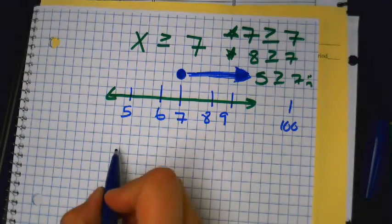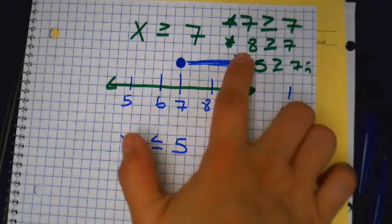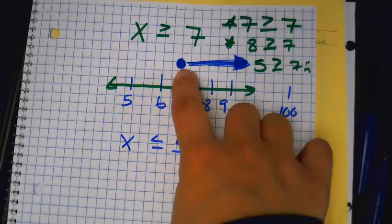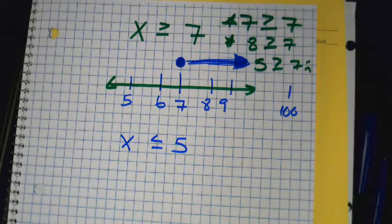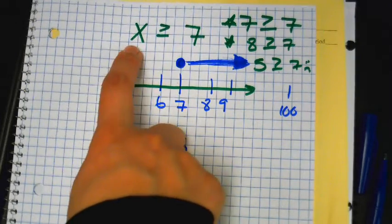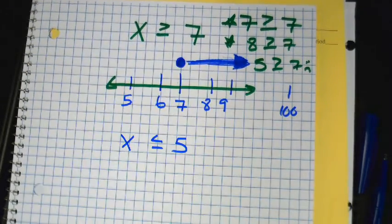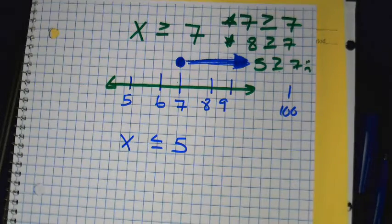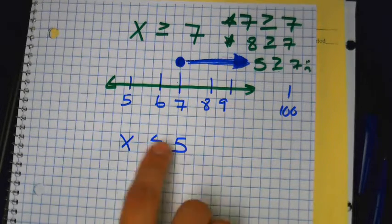Try graphing this one on your own. The graph is your answer — the open or closed circle and which way you shade. For example: you can ride the roller coaster if you're greater than or equal to the age of 7. Can you ride it if you're 10? Yes. If you're 5? No, because 5 is not greater than or equal to 7. X is less than or equal to 5 — you can go on the little train at the mall if you're less than or equal to 5 years old.